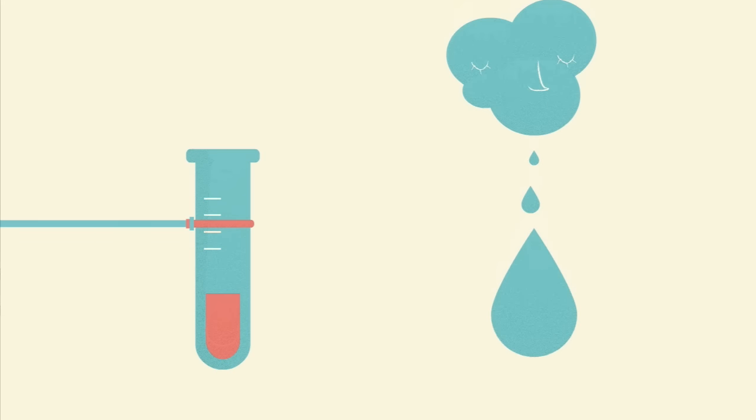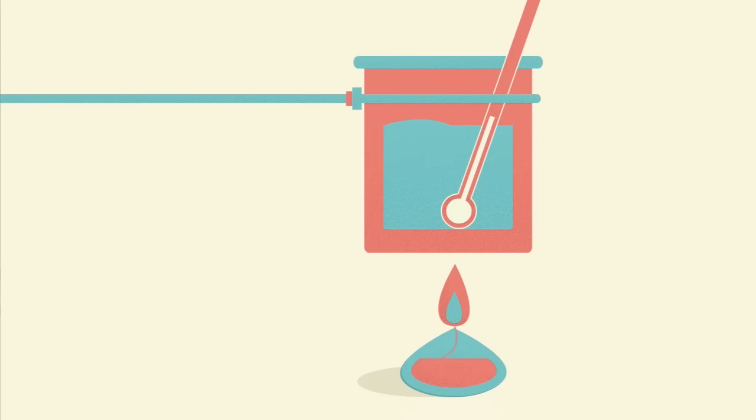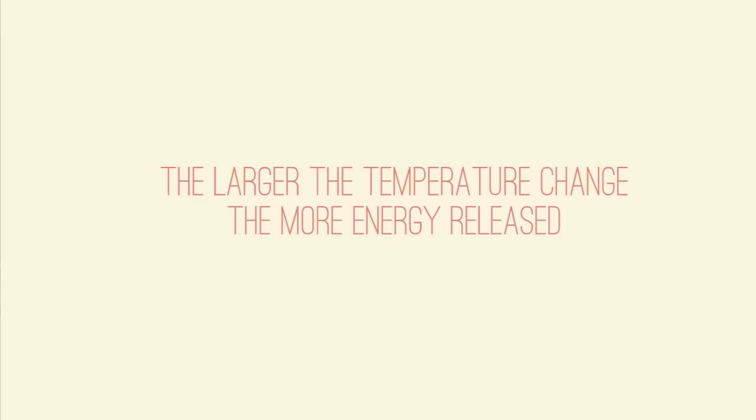In summary, calorimeters are devices that can measure the heat of chemical reactions, physical changes or heat capacities for different materials. A simple experiment showed how measuring the temperature change of water could be used for this purpose. The larger the temperature change per gram of fuel, the more energy released.